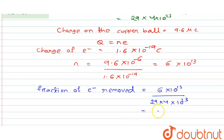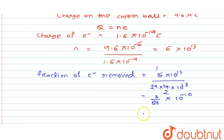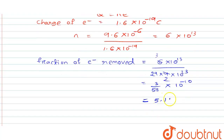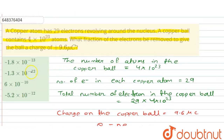By solving this we get 3/58 × 10⁻¹⁰, which equals 5.17 × 10⁻¹², nearly equal to 5.2 × 10⁻¹². From the options given in the question, option D — 5.2 × 10⁻¹² — is the correct answer.